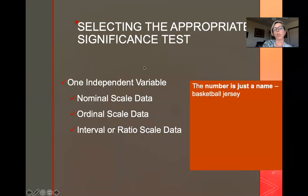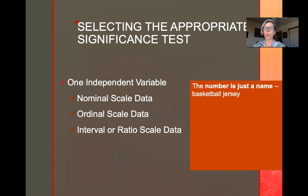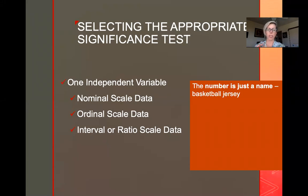There are three different types of variables. The first one is nominal variables. Nominal sounds kind of like 'nom' — name. This is where the number in question is just a name; it doesn't mean anything. We might say men are two and women are one in our dataset and code them that way. There's nothing about that number that means anything — it could be men are five and women are eight. The number is just a name, just a placeholder, just a way of marking.